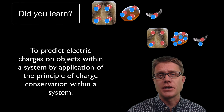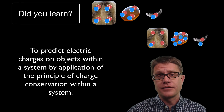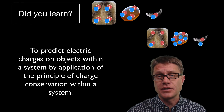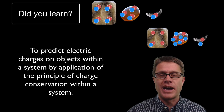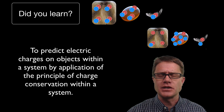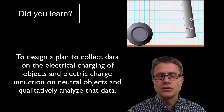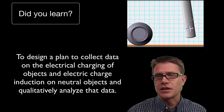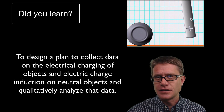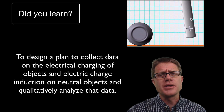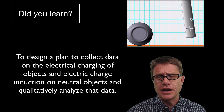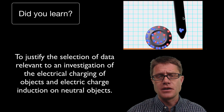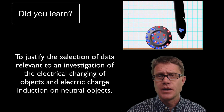Did you learn to predict where the charges go before and after charging in a system? Remember the net total of charges before and after is the same — they just might be in different places. Did you learn to design and collect data to figure out qualitatively — not with a number — where the charge is found? And could you add the charges to it? I hope so, and I hope that was helpful.